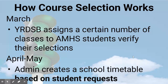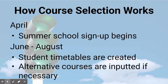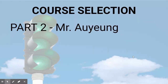In April and in May, the administration creates a draft timetable for students based upon student requests. In April, summer school opens, so if you feel at the end of grade nine you would like to take a course in summer school, you can do so. If you need to repeat a course, you're able to do so by signing up on My Blueprint in April. Between June and August, student timetables are created and alternative courses are inputted if necessary.